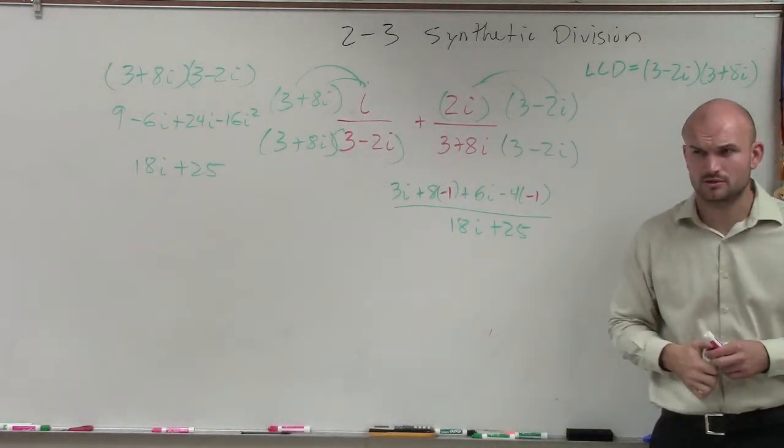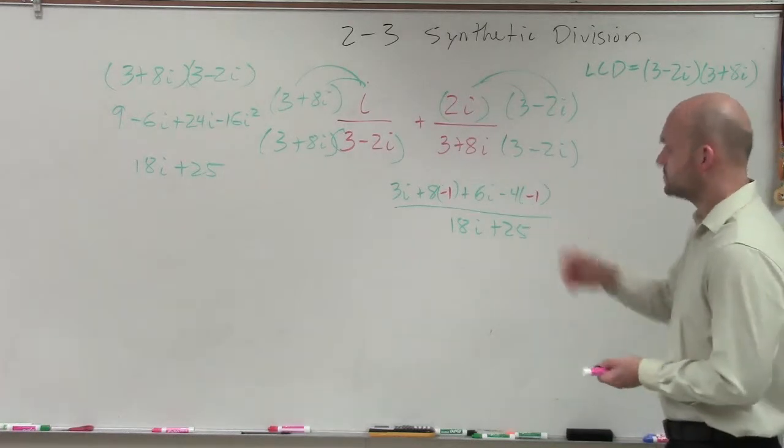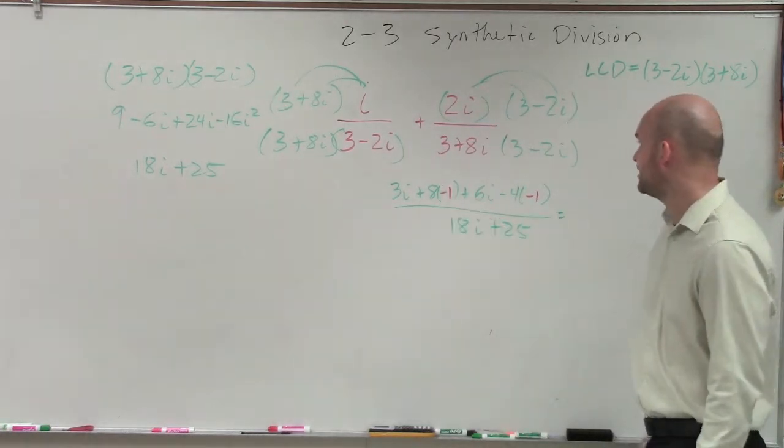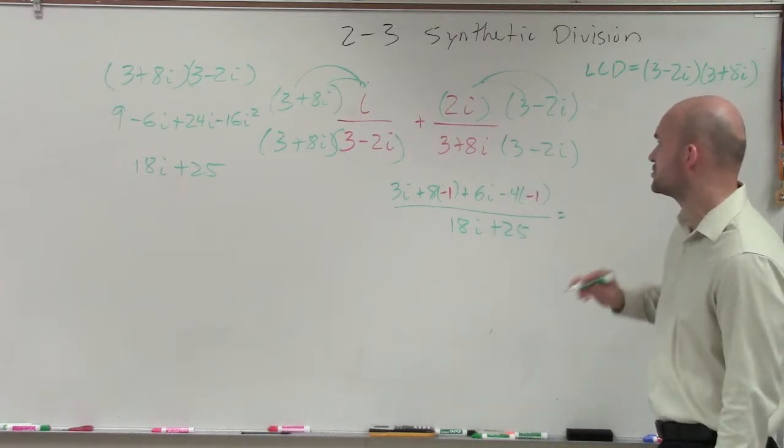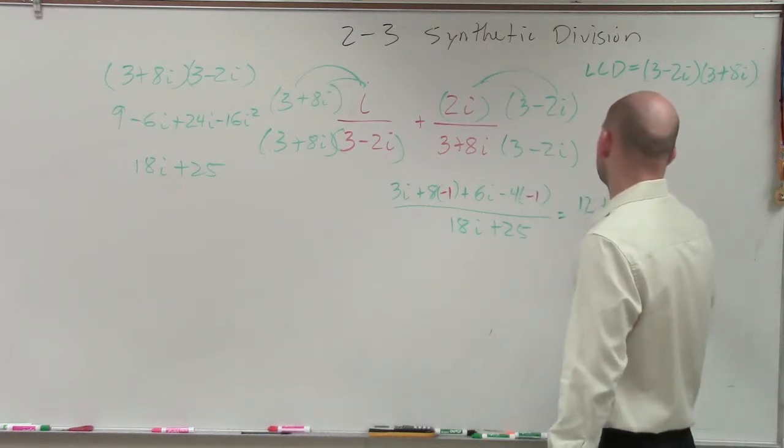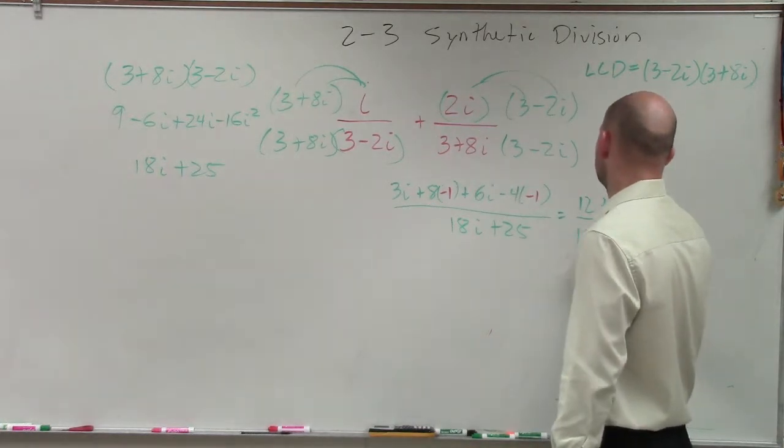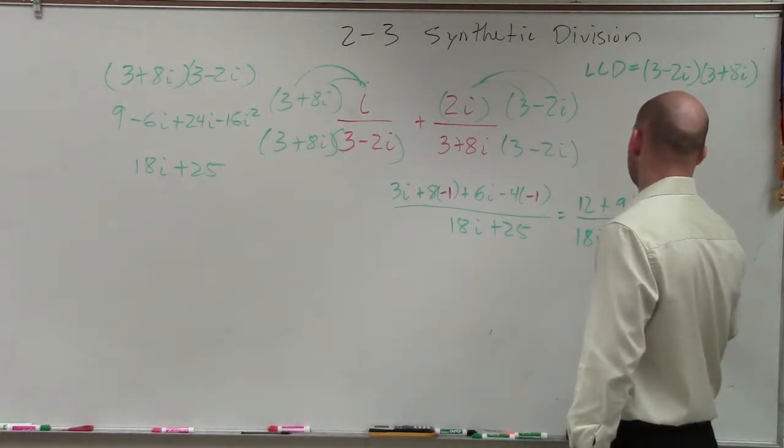Everybody check my work. Looks good. So now I can simplify this. Up top, that's going to become a negative 8. That's going to become a positive 4, so that's 12. So it'll be 12 plus 9i over 18i plus 25.